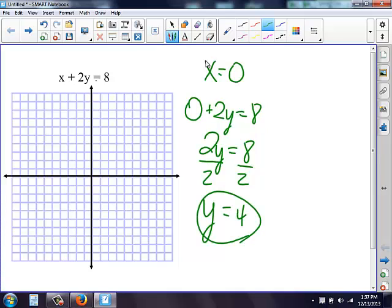Now remember, this is your y-axis and this is your x-axis. So if y equals 4 on your y-axis at 4, 1, 2, 3, 4, I'm going to put a dot.